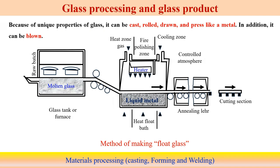Because of the unique properties of glass, it can be cast, rolled, and drawn, since it has different levels of viscosity at different states. It can also be pressed like a metal, and blown with the application of pressure to take particular shapes. All these kinds of operations can be performed in the case of glass processing.